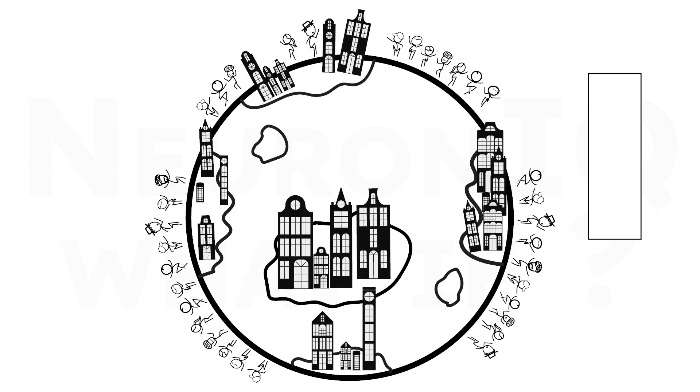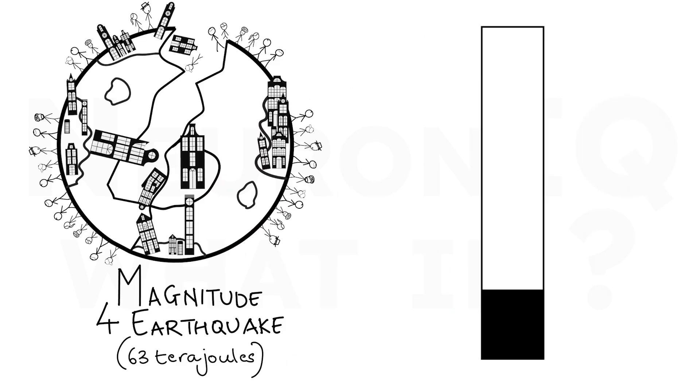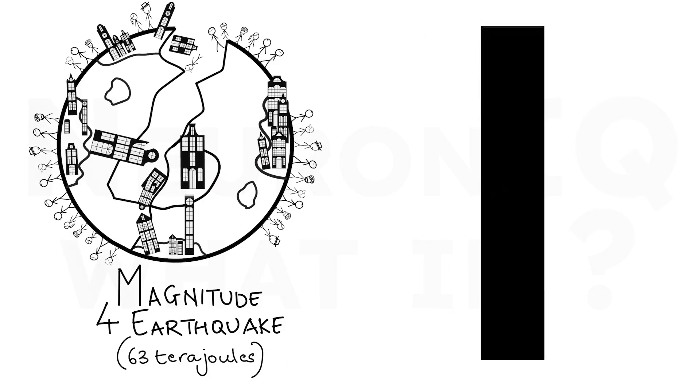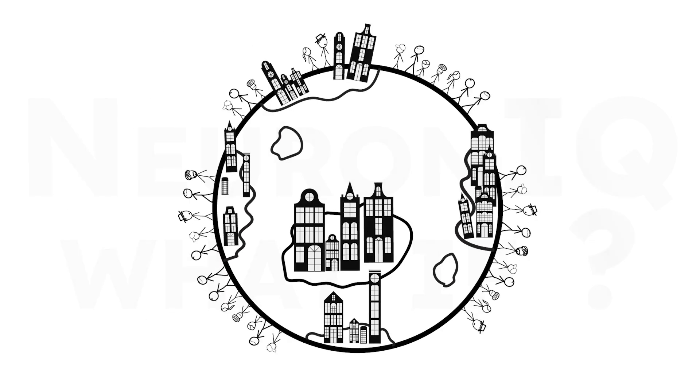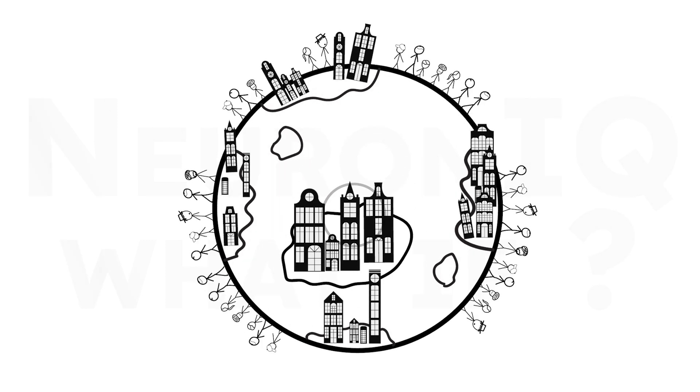For comparison, earthquakes release energy on a far greater scale. A magnitude 4 earthquake, for instance, releases about 63 terajoules of energy, far beyond what our collective jump would generate. So it's unlikely we'd trigger an actual earthquake, but we could produce measurable ground vibrations.